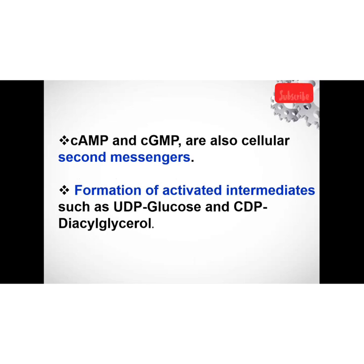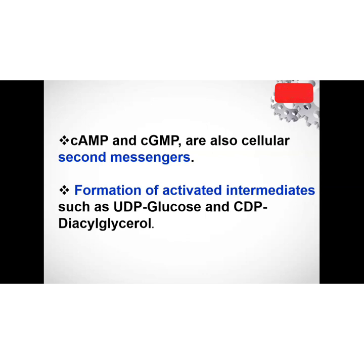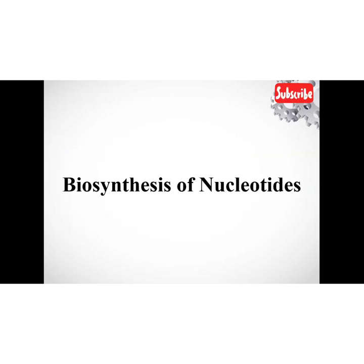We also have cyclic AMP and cyclic GMP, which are second messengers in cellular metabolism. Cyclic AMP is catalyzed by adenylate cyclase, while cyclic GMP is catalyzed by guanylate cyclase. Additionally, nucleotides are involved in the formation of activated intermediates such as UDP-glucose and CDP-diacylglycerol. UDP-glucose, for example, is used in the conversion of galactose to glucose for energy production.